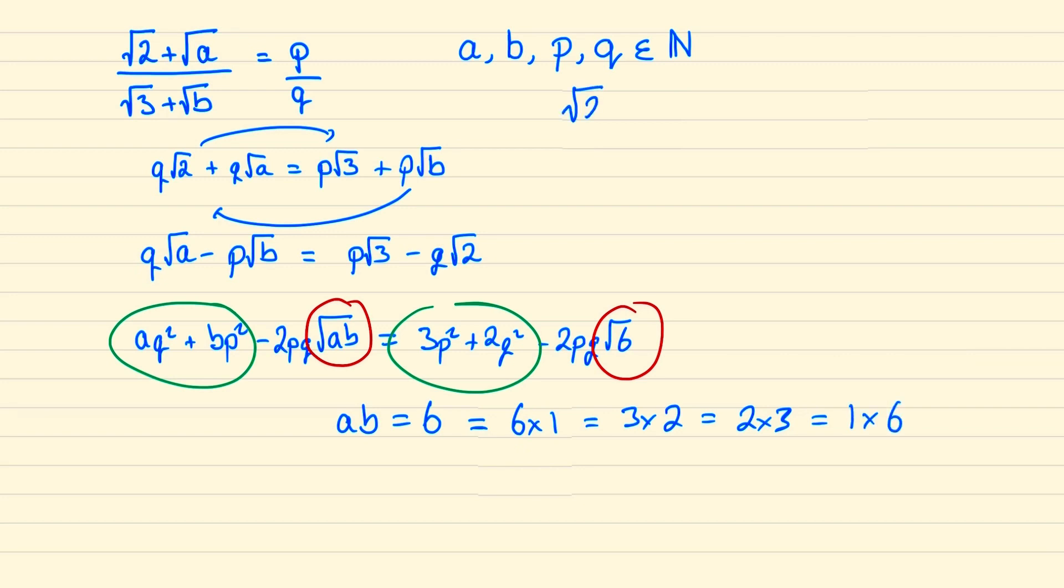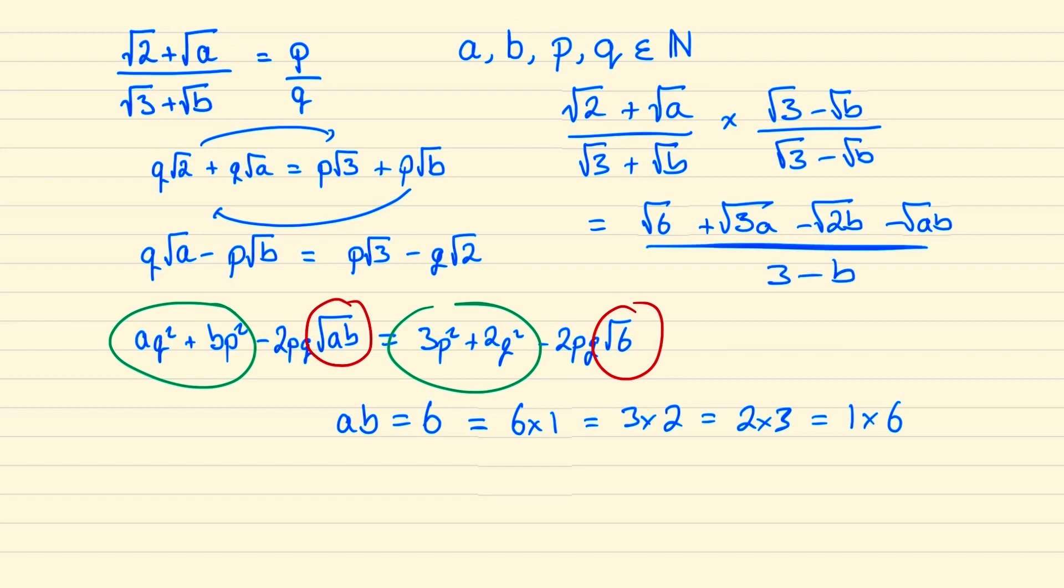Now if we go back to our starting expression and we rationalize this by timing top and bottom by root 3 minus root b then this all becomes root 6 plus root 3a minus root 2b minus root ab all over 3 take away b. And because root 6 is equal to root ab then these two parts will cancel out.